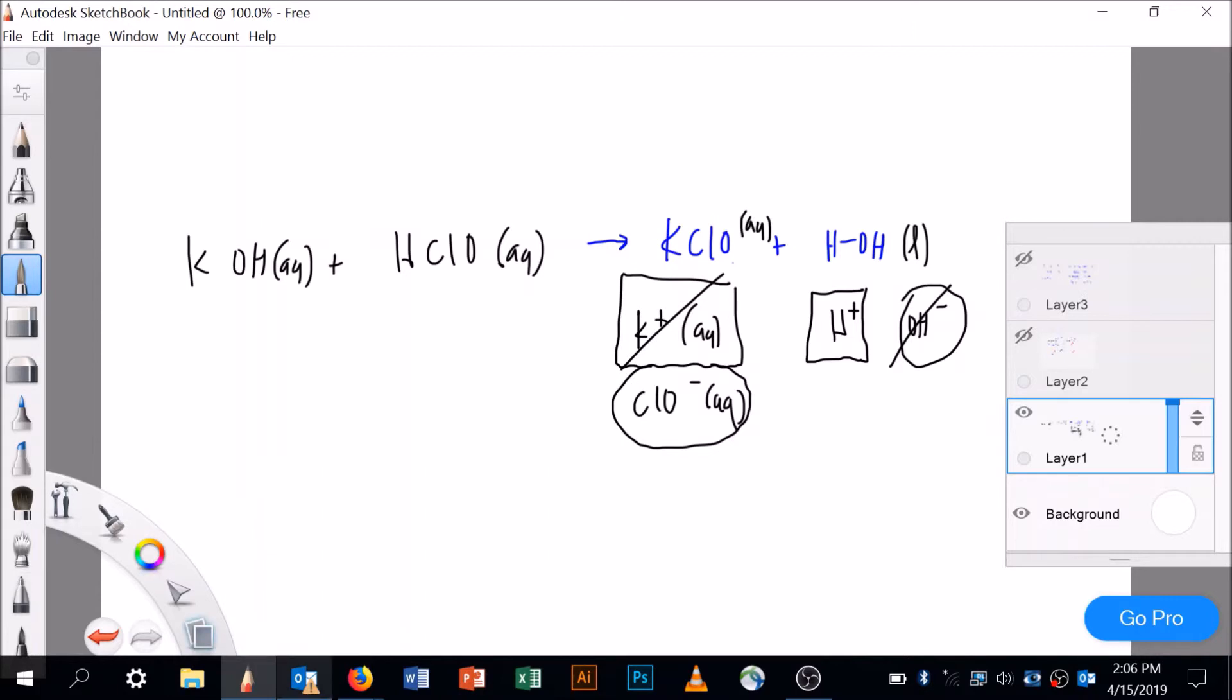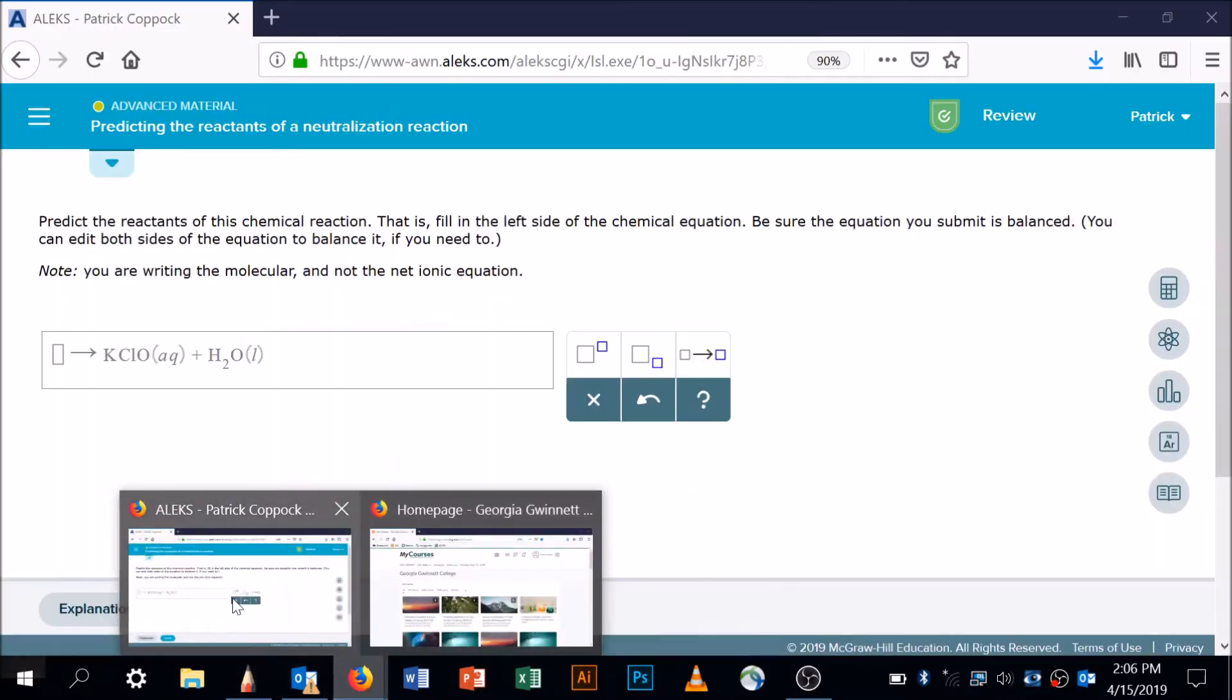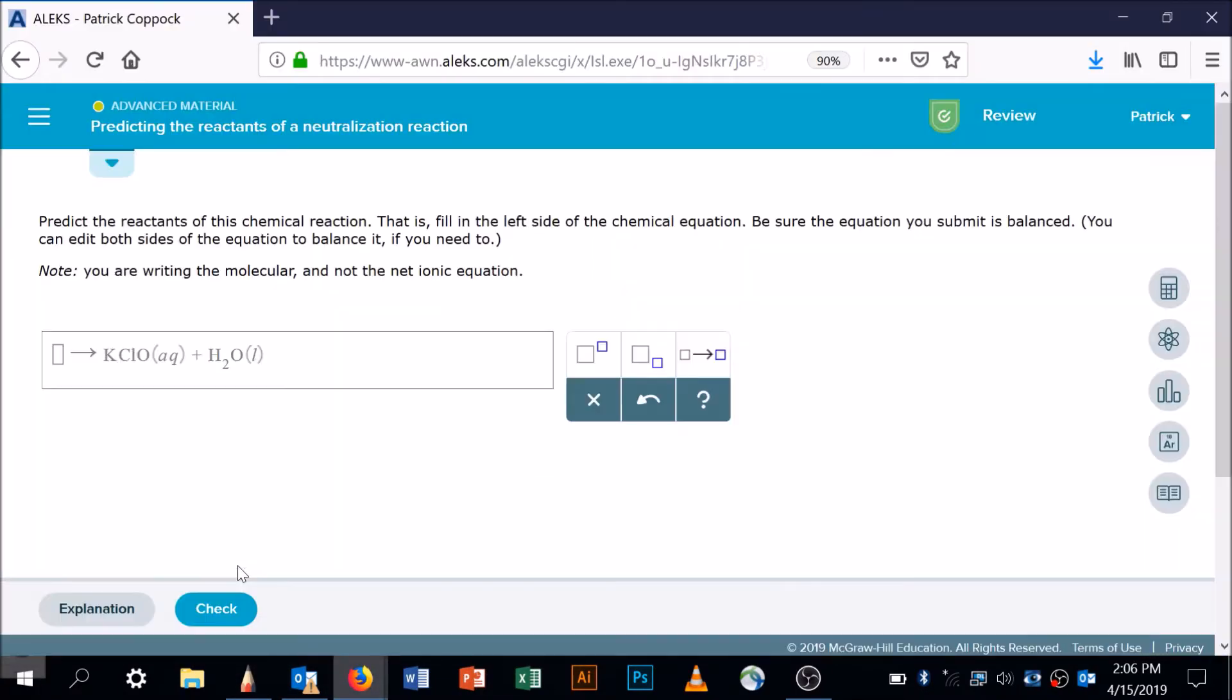So potassium hydroxide aqueous is one of the reactants and HClO is another reactant. Let's put this in here, get the little nice green bar for it, and then we'll do another one.